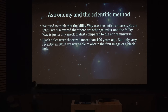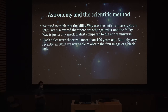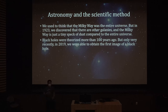Black holes were theorized more than 100 years ago, but only very recently — in 2019 — were we able to obtain the first actual image of a black hole. Until that point, black holes were essentially just a hypothesis. No one really thought they didn't exist, because we had a lot of indirect evidence and they follow immediately from the theory of general relativity, but only in 2019 did we get direct evidence that black holes existed.